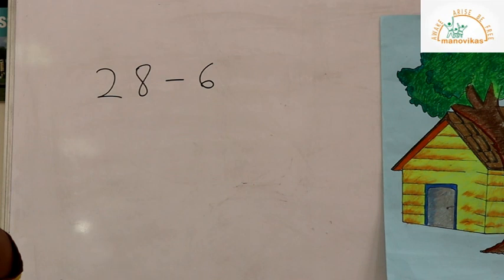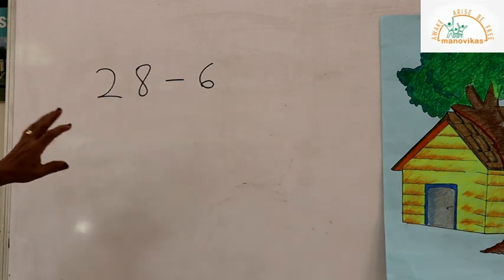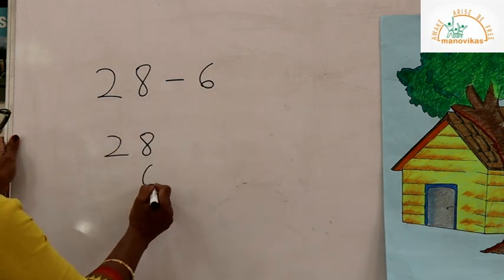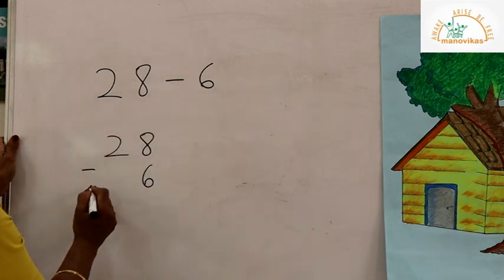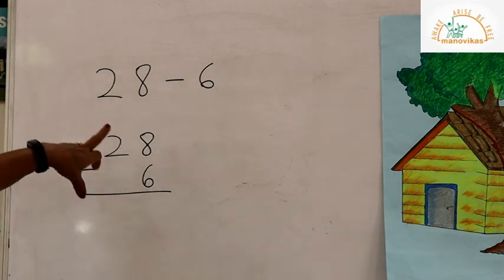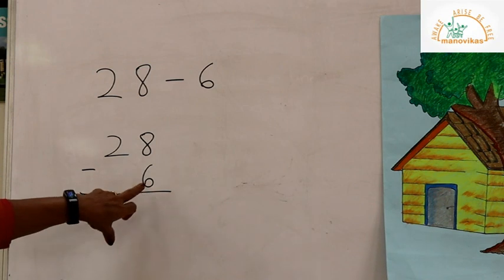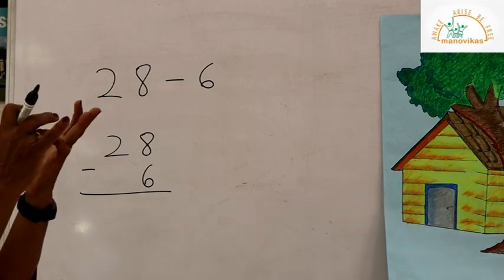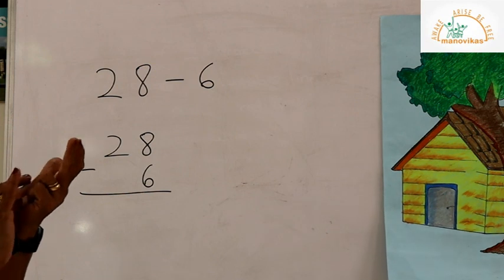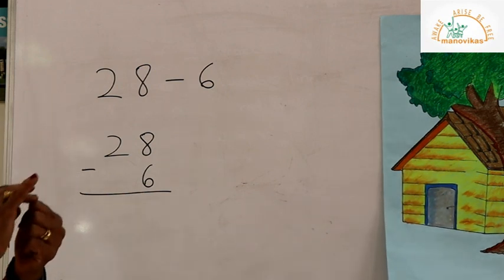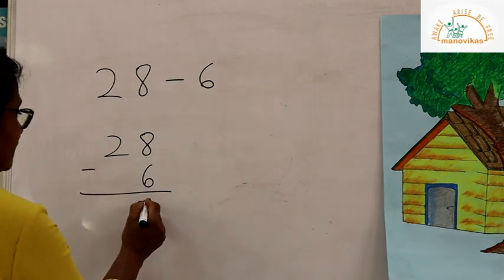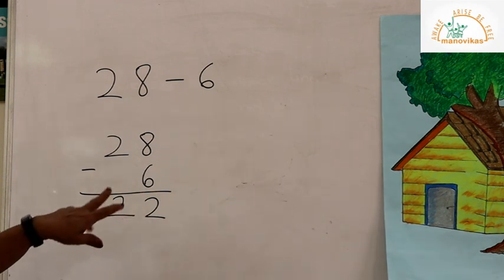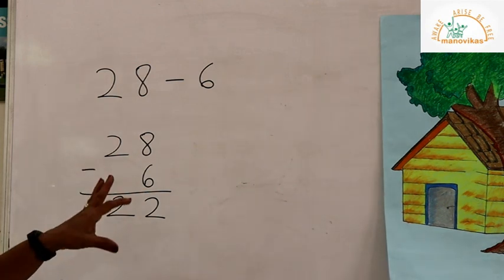Six is a one-digit number and 28 is a two-digit number. Let's write 28 and write the 6 in the ones place — we write 6 in the ones place because it is a one-digit number. Now I have 8 ones and 6 ones; I have to minus 6 ones from 8 ones. Counting back: 7, 6, 5, 4, 3, 2 — I get 2. So the number of trees remaining in my garden is 22.